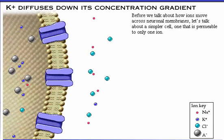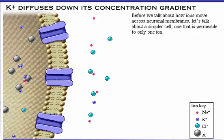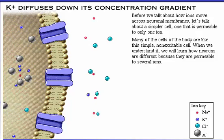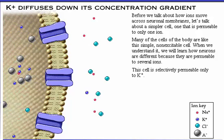We are studying neurons, but before we talk about how ions move across neuronal cell membranes, let's talk about a simpler cell — one that is permeable to only one ion. Many of the cells of the body are like this simple, non-excitable cell. When we understand it, we will learn how neurons are different because they are permeable to several ions. This cell is selectively permeable only to potassium.